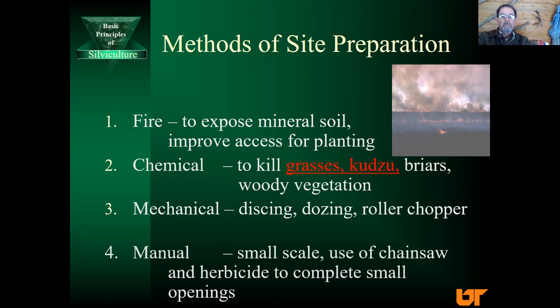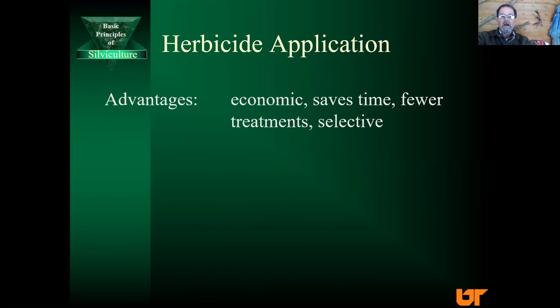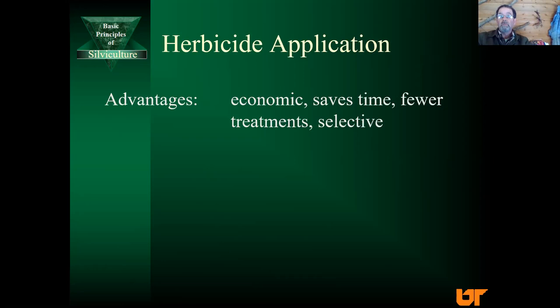Manual site preparation might include use of a chainsaw or herbicide to control some trees left in a regeneration opening where you want to plant back without bringing a dozer in. Herbicide applications are primarily economic — much cheaper than manual labor, they save time, require fewer treatments, and can be selective. Herbicides exist to kill grasses but not broadleaves, or hardwoods but not pines, depending on your objective. Disadvantages include seasonal restrictions, the possibility of killing non-target species if used carelessly, and potential environmental concerns if not properly used — which is why you want to use licensed herbicide applicators.